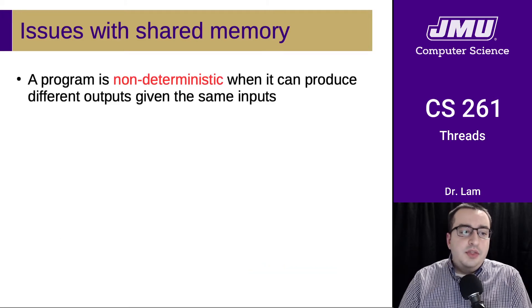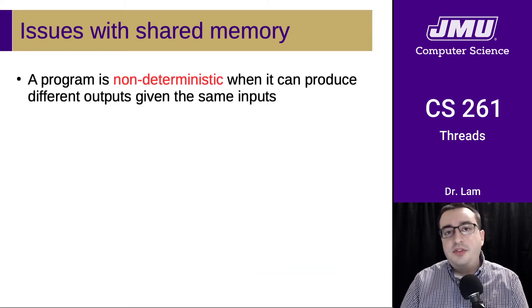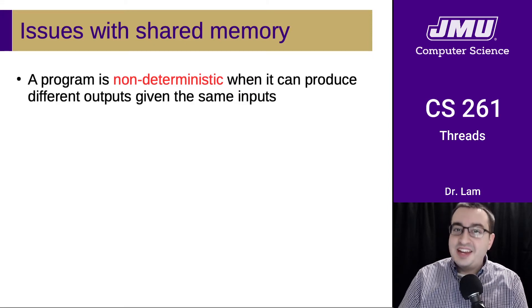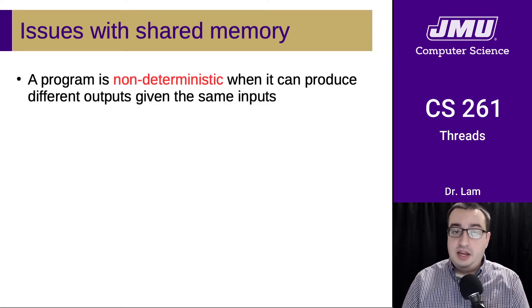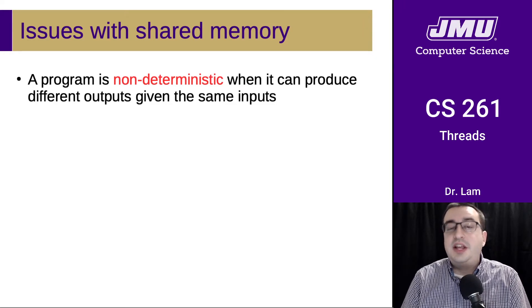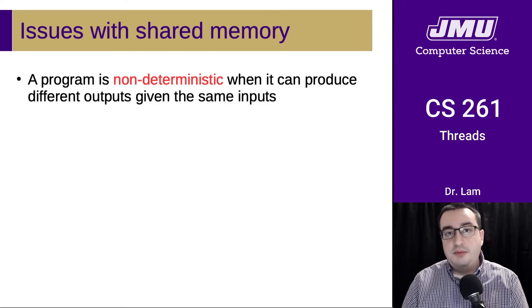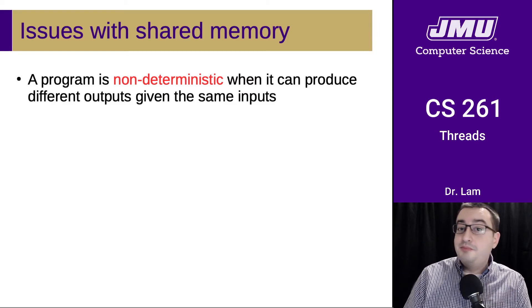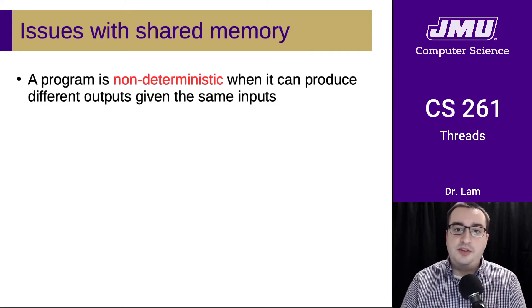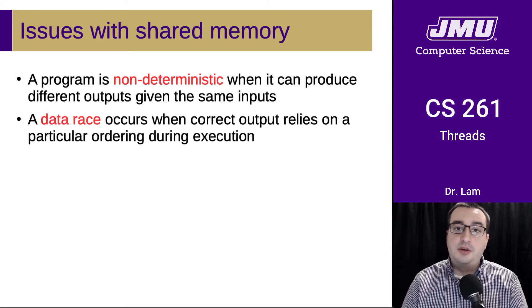The program is now non-deterministic. If we happen to get the first interleaving, we get the correct answer. If we get the second interleaving, we get the wrong answer. Non-determinism means you can get different outputs given the exact same inputs. You may get the correct answer most of the time, and it may be incredibly difficult to induce the program to give you the incorrect answer. But as long as that possibility exists, the program is considered non-deterministic.